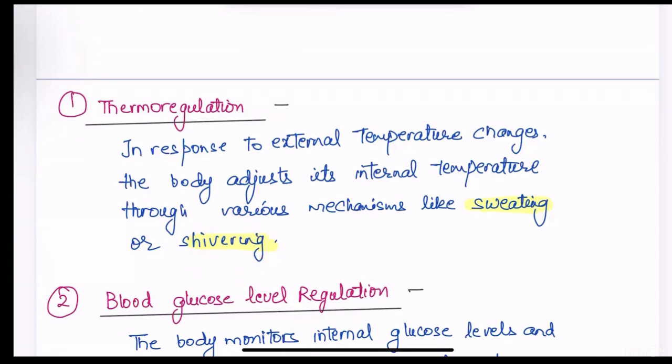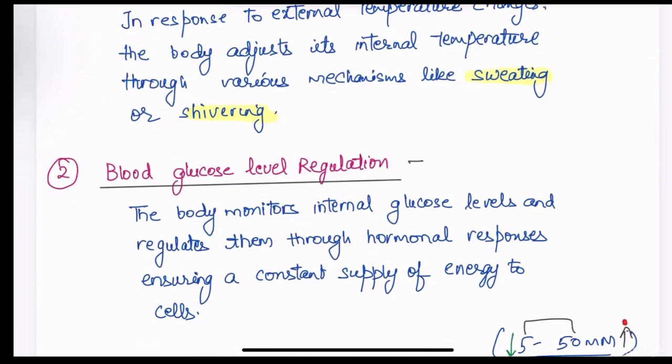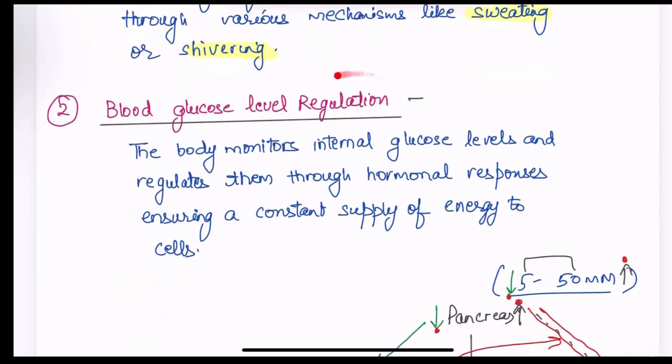These are the steps of thermoregulation, how our body regulate heat coming from outside or blood glucose regulation. The body monitors internal glucose levels and regulates them through hormonal responses. And they ensure a constant supply of energy to cells.